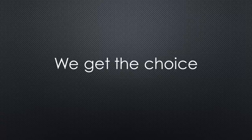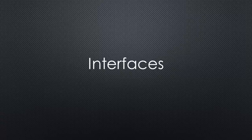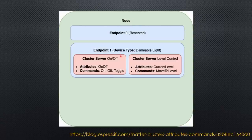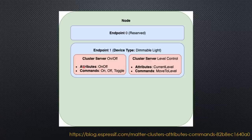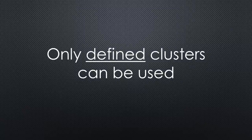Matter nodes expose devices that contain endpoints, like a dimmable light. This device has two cluster servers: one to switch the light on or off, and the second to set a particular illumination level. A third could also be color. Each cluster server offers attributes and commands to manipulate the attributes. As in BLE, only defined clusters can be used with Matter in a standardized way.